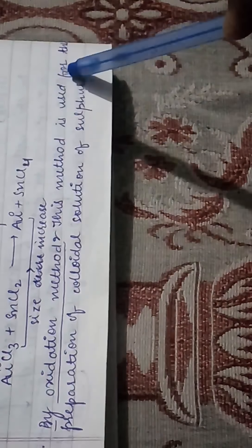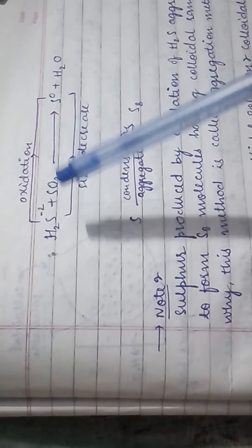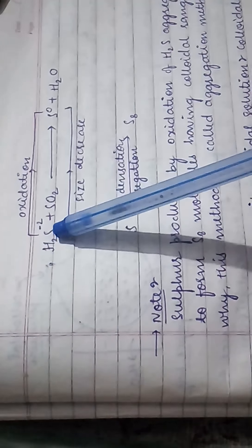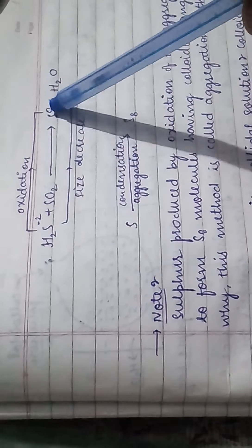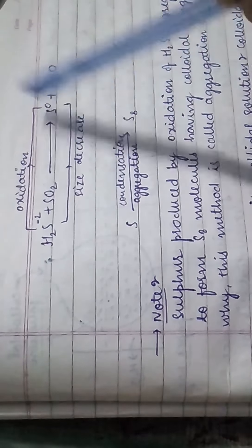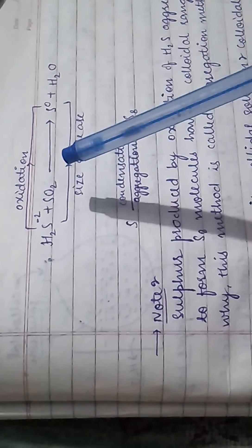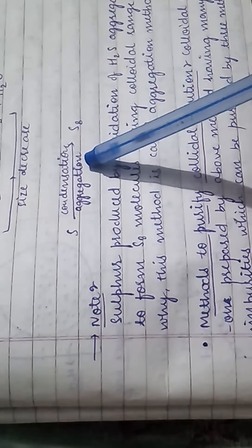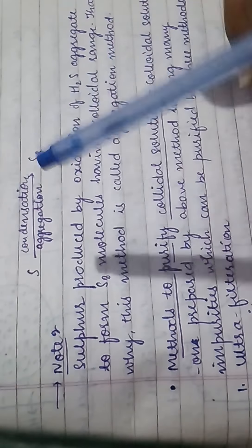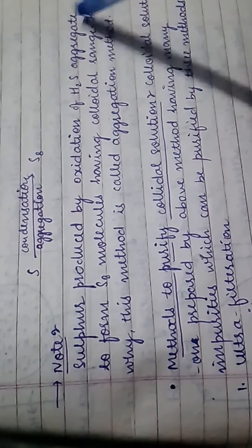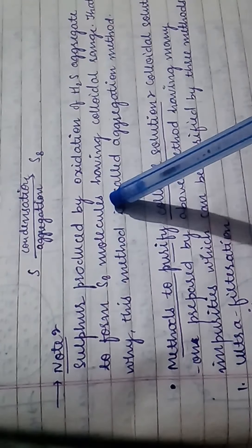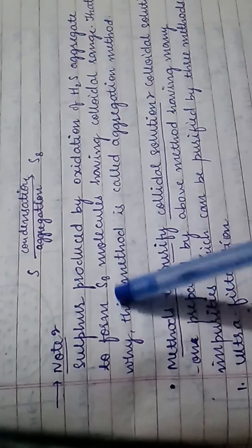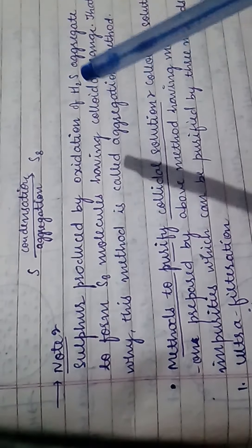Now we have the oxidation method, used for the preparation of colloidal solution of sulfur. Here, H2S is reacted with SO2 to give sulfur and H2O. The oxidation state of sulfur goes from minus 2 to 0. Since small particles aggregate to form colloidal-sized particles, this is called the aggregation method.